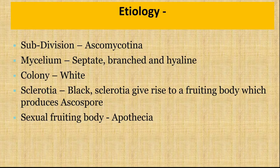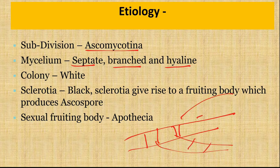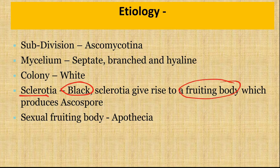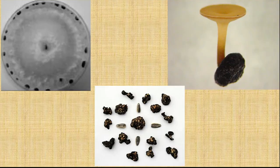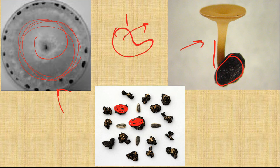Etiology: The fungus belongs to subdivision Ascomycotina. The myceliums are septate, branched and hyaline. इसके mycelium का कोई specific color नहीं होता, colony white color की होती है। इसमें sclerotia बनते हैं जो black color के होते हैं और naked eye से visible होते हैं। जब यह sclerotia germinate होता है तो एक cup-shaped sexual fruiting body बनाता है जिसे apothecium कहते हैं। इस apothecium में sexual spores बनते हैं जिसे ascospores कहते हैं। Sclerotia का size बहुत बड़ा होता है।